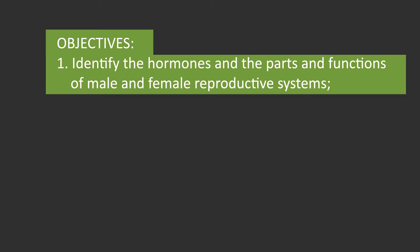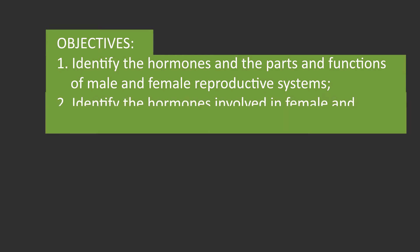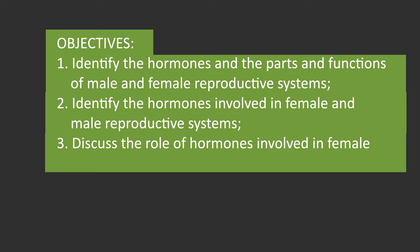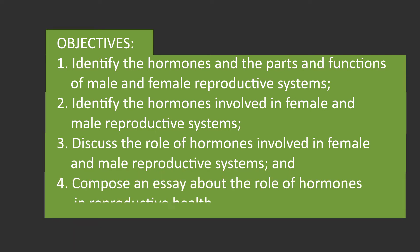For number one, identify the hormones and the parts and functions of male and female reproductive systems. Number two, identify the hormones involved in female and male reproductive systems. For number three, discuss the role of hormones involved in female and male reproductive systems. And for number four, you are going to compose an essay about the role of hormones in reproductive health.